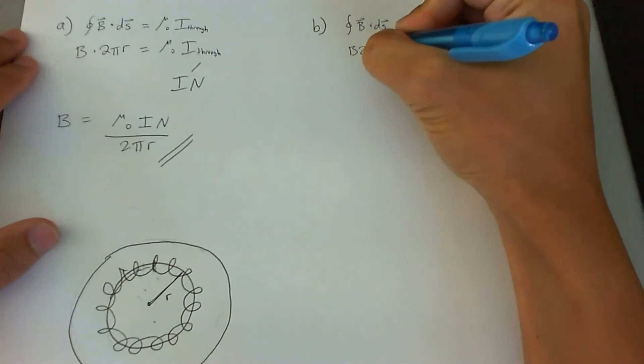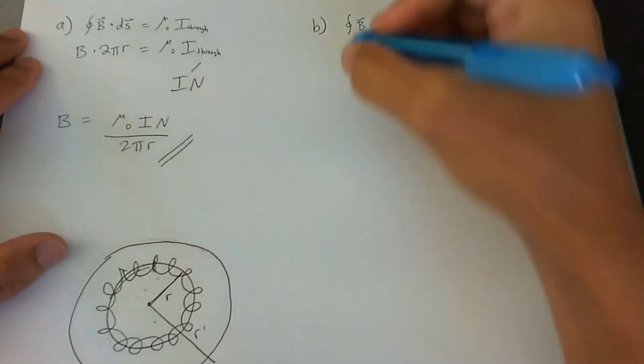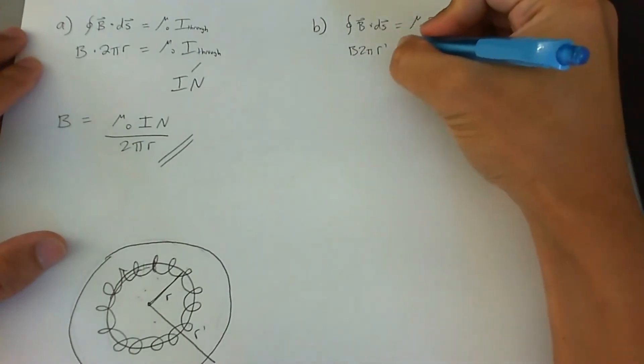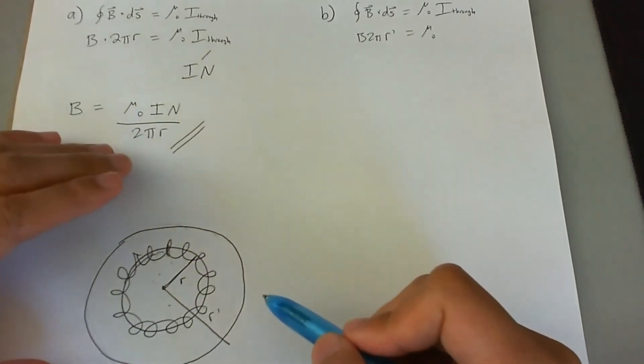So B times 2π r, and we'll make, I guess we'll call it r prime. How about that? μ₀. And now we have to find out the total current inside the amperian loop.